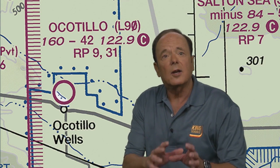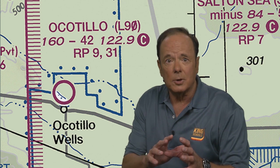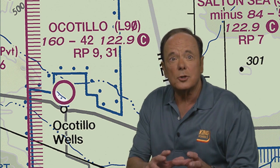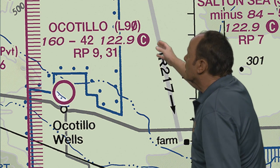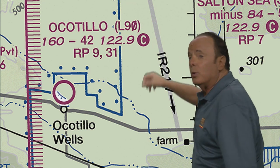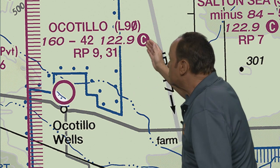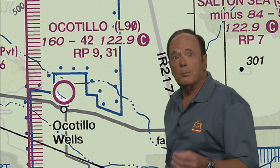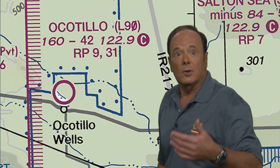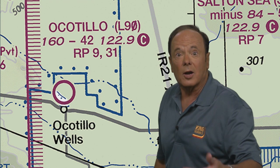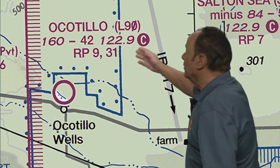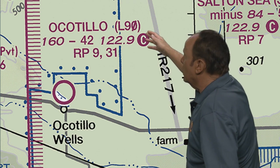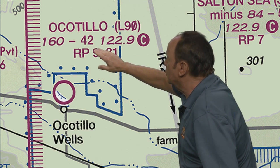So they've set aside common traffic advisory frequencies, and they show them on the chart with a little letter C inside a blue or magenta circle. The circle will be blue if the airport has a part-time tower with a common traffic advisory frequency, or magenta if it does not have a tower — as in this case. The frequency here is 122.9.